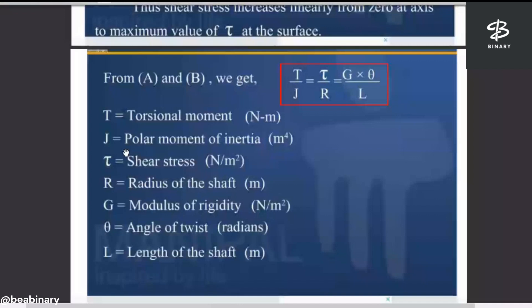T is the moment in newton meter. J is the polar moment of inertia in meter to the fourth. Tau is the shear stress in newton per meter squared. R is the radius of the shaft. G is the modulus of rigidity in newton per meter squared. Theta is the angle of twist, and L is the length of the shaft in meters.